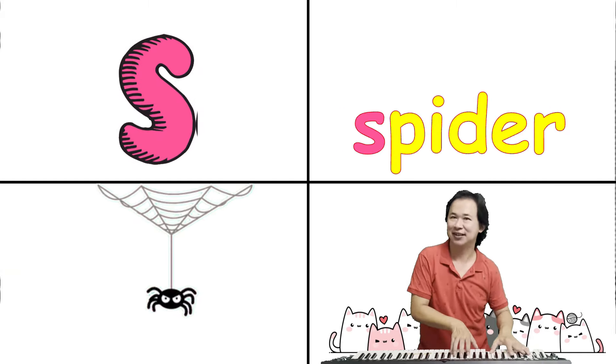U is for Umbrella Bird, ah, ah, ah. V is for Vampire Bat, v, v, v.